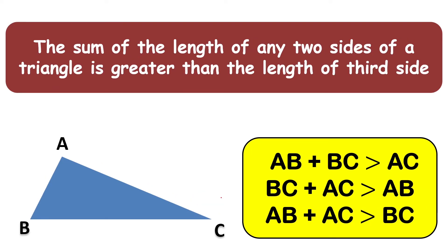The next rule is that the sum of the lengths of any two sides of a triangle is greater than the length of the third side. For example, AB plus BC is always greater than the third side, and BC plus AC is always greater than AB. You can take some examples and check this at home as well.